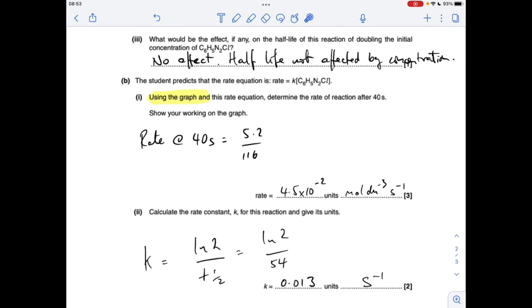So to get k for first order reactions, you can go LN2 over half-life. So LN2 over 54. I'm still getting the same answer. Obviously the units will be the same as well.